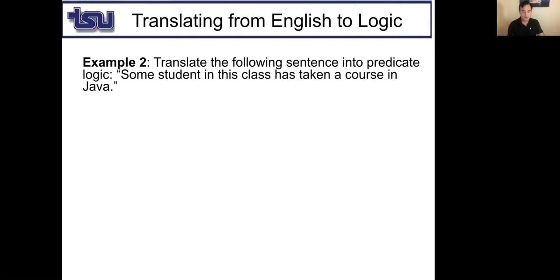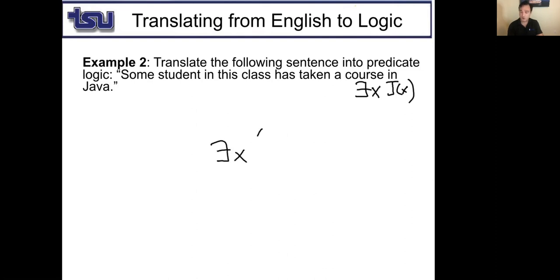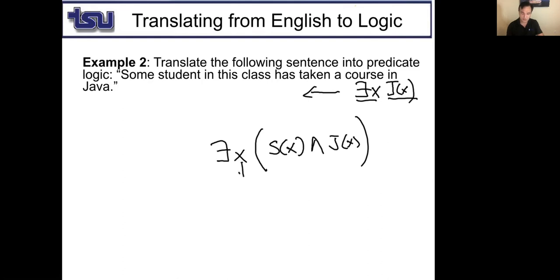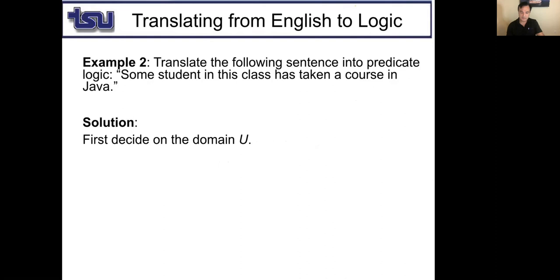Now consider 'some student in this class has taken a course in Java.' If the domain is students in this class, we say ∃x J(x) — there is at least one student who has taken Java. If the domain is all people, we say ∃x (S(x) ∧ J(x)) — there is at least one person in the world who is in this class and has taken Java. Note that with existential quantifiers over all people, we use conjunction (∧), not implication.